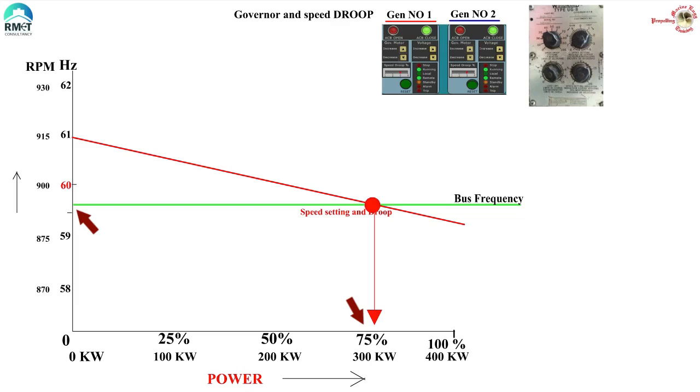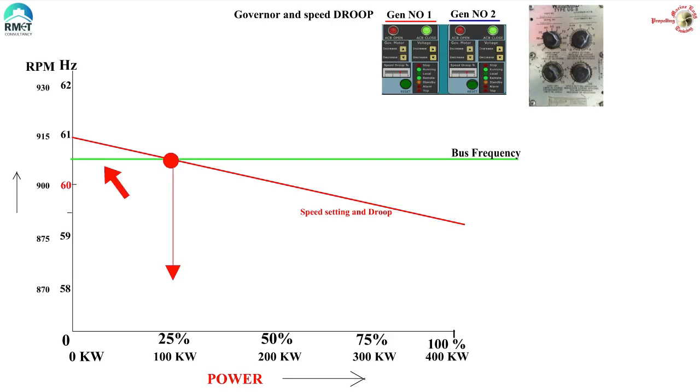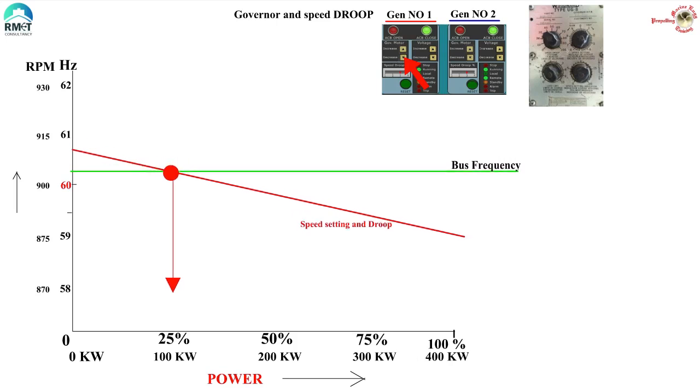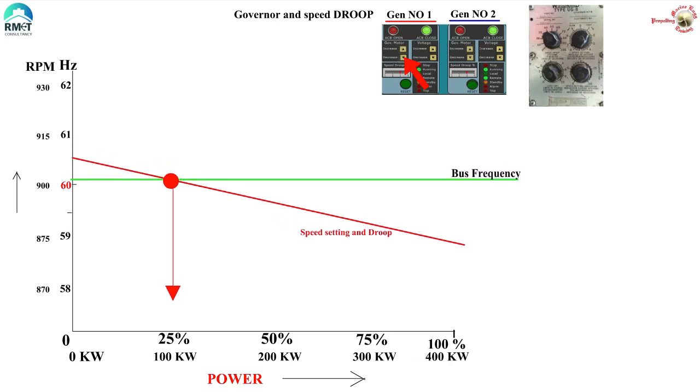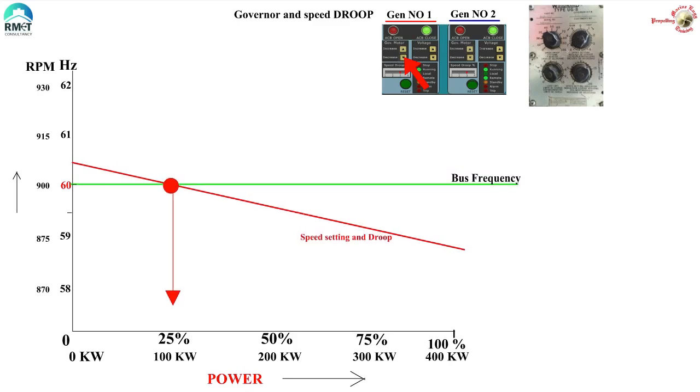It cannot restore it back to 60 always. Similarly, if we reduce the load on the generator, the governor will maintain the RPM and frequency at higher values, not at 60. If we want the RPM to be 900 and 60 hertz, then we need to increase or decrease the speed setting knob, which effectively increases and decreases the fuel rack after every change in load. This is what we call as a droop. We will elaborate its significance further later on.